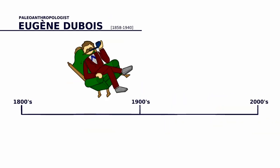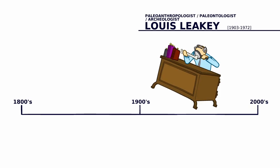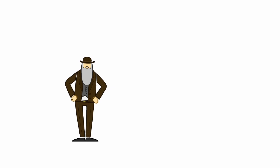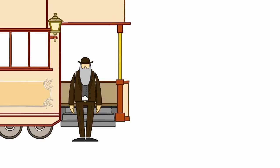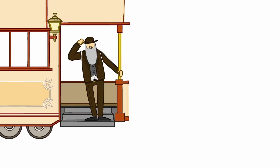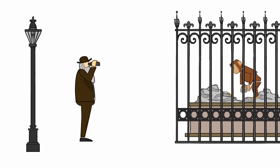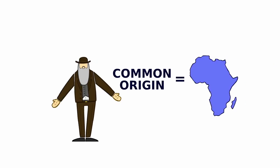Scientists have contemplated these questions for centuries. Perhaps unsurprisingly, the co-discoverer of the theory of evolution, Charles Darwin, was first to formulate a testable hypothesis about where we evolved. All it took was a trip to the London Zoo. After spending some time observing chimpanzees and gorillas, he thought it likely that our species' common origin was African.